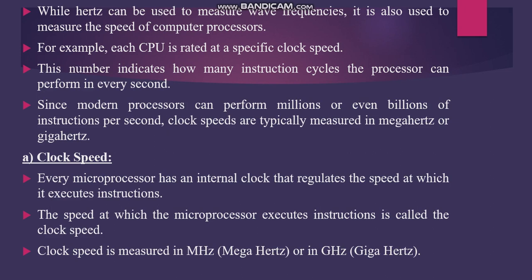Every microprocessor has an internal clock that regulates the speed at which it executes instructions. Clock speed is measured in megahertz and gigahertz.